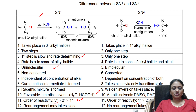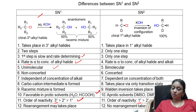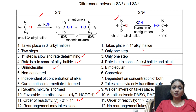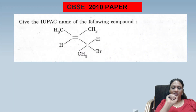In SN1, the rate is directly proportional to the concentration of only one alkyl halide. In SN2, the rate is directly proportional to both the concentration of alkyl halide and the nucleophile (alkali) — that's why it is called SN2. The complete answer with solvent conditions is given. Please note it and learn it.